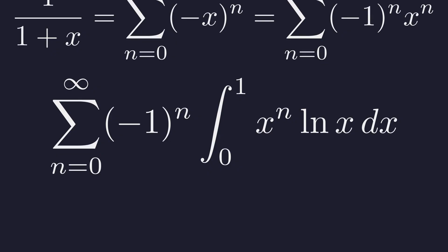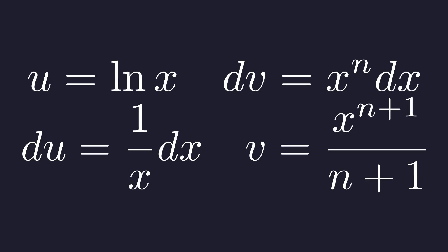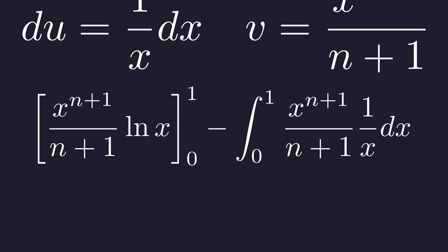Now we need to solve x to the power of n times natural log of x. This is perfect for integration by parts, though the bound at 0 is tricky. We choose u to be natural log of x and dv to be x to the power of n. Differentiating and integrating gives us the parts. Plugging into the formula gives us this.